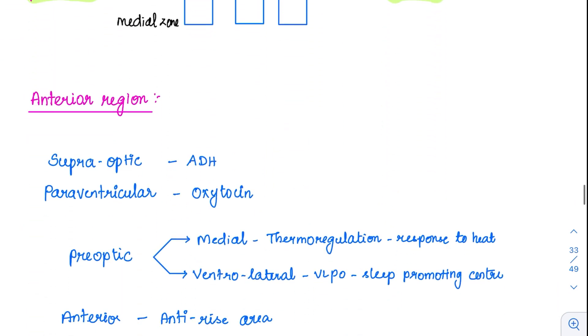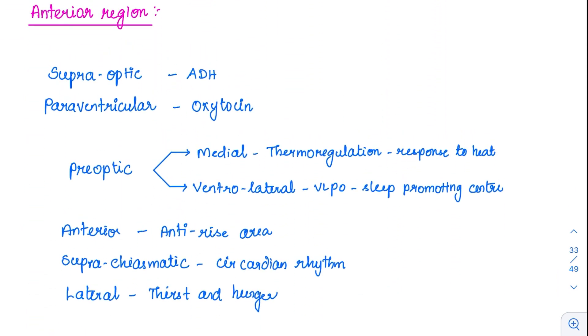Let's begin with the anterior region. The two important nuclei are the supraoptic and paraventricular. We will study this in endocrine physiology also. They are involved in production of anti-diuretic hormone and oxytocin. Both nuclei are capable of producing both substances but predominantly they produce these substances.